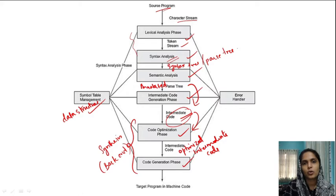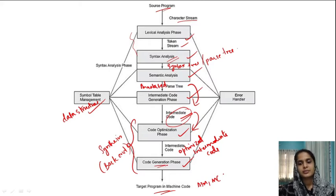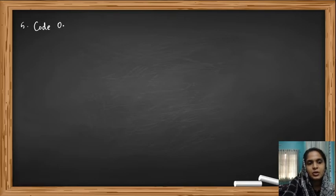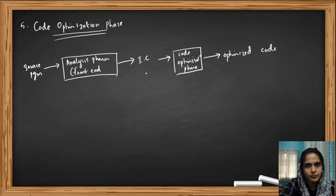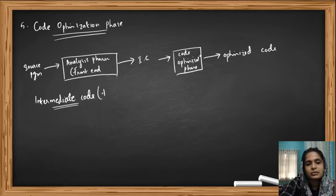This optimized code is then fed to the code generation phase, which produces the final target program — either assembly code or machine code. So this is the fifth phase of a compiler: optimization. Our source program is first fed to the analysis front end which produces intermediate code as output. This intermediate code is then optimized to get an optimized intermediate code. For intermediate code we use three-address code, as we saw in the previous video.